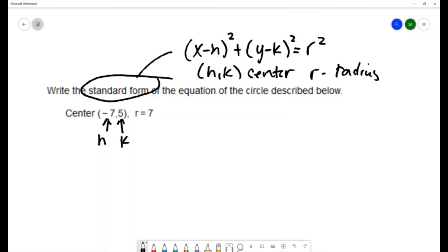That would give me (x - (-7))² + (y - 5)² = 7². I'll do a little bit of simplifying. I don't want to leave this double negative...